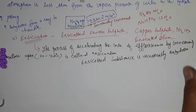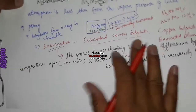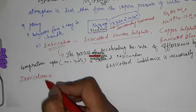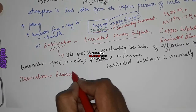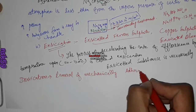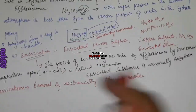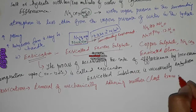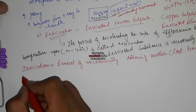Another important physical chemical process is desiccation. These are all drying processes. Desiccation is the removal of mechanically adhering moisture — that is, the last traces of moisture — and this is called desiccation.